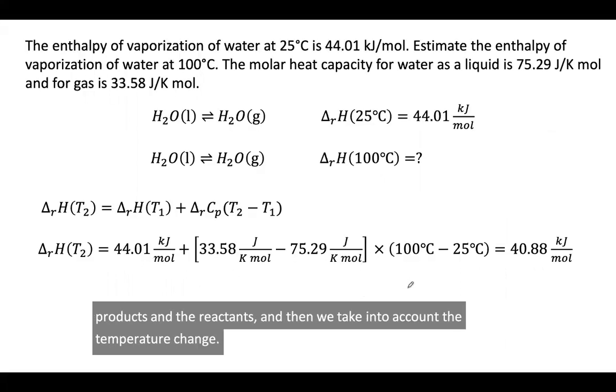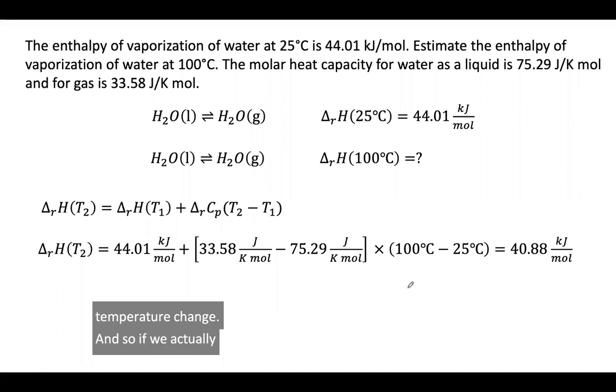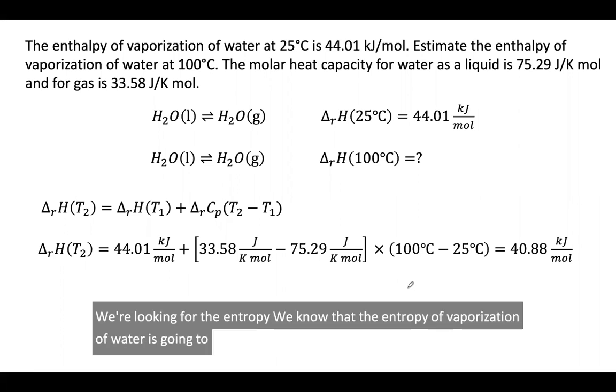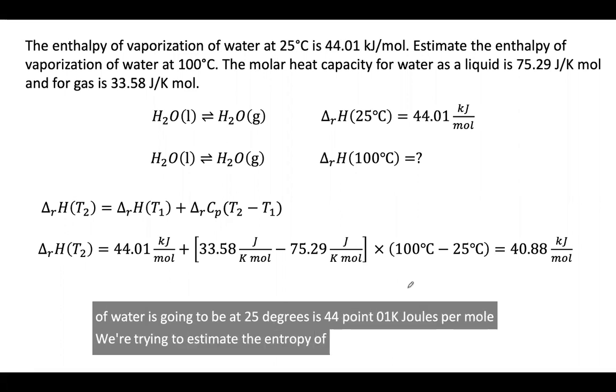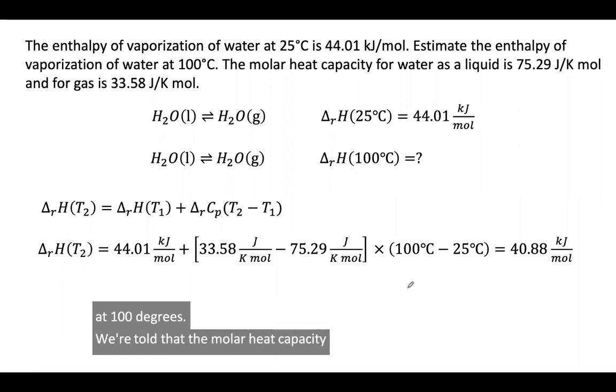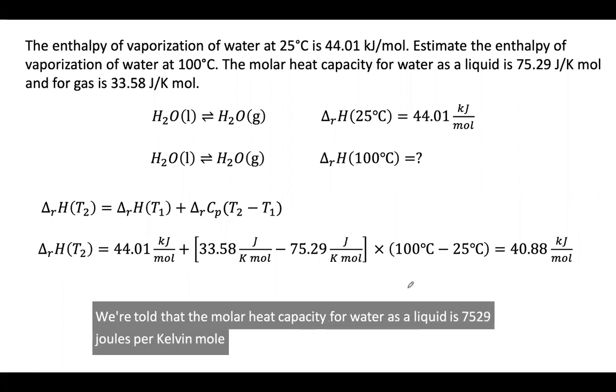If we actually use this, we're looking for the enthalpy. We know that the enthalpy of vaporization of water is going to be at 25 degrees is 44.01 kilojoules per mole. We're trying to estimate the enthalpy of vaporization of water at 100 degrees. We're told that the molar heat capacity for water as a liquid is 75.29 joules per Kelvin mole, and for gas is 33.58 joules per Kelvin mole.